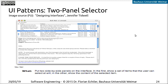Sometimes you can also have this extended as a three-panel selector, where you first select a folder on the left, then select the individual email, and then get that email shown in the third panel. But the basic idea is also possible with just two panels, and that's what this pattern is all about.